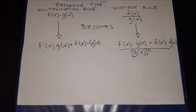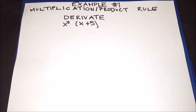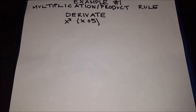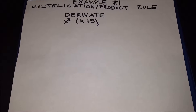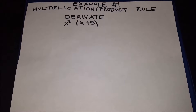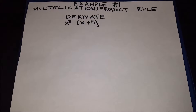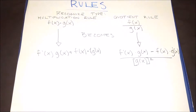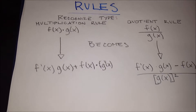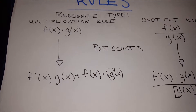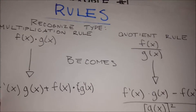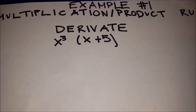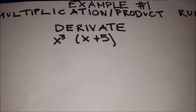Let's go on to our first example, which is on the multiplication or product rule. This function is x cubed multiplied by the quantity of x plus 5. Going back to our multiplication rule, we have two functions multiplied by each other: x cubed times x plus 5.